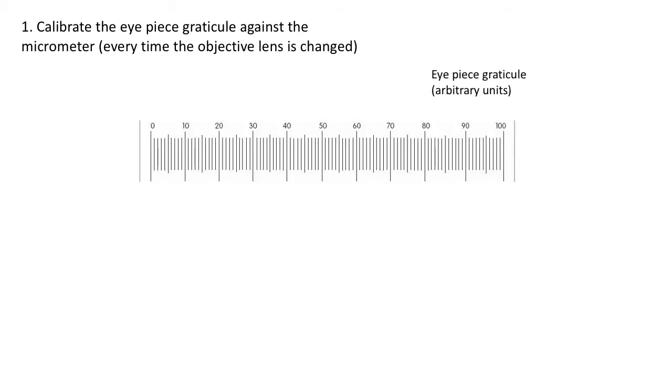When you look down the objective lens, you will always be able to see the graticule. What you want to do is move the slide around until you can position the micrometer on the slide next to the eyepiece graticule. In this example, you can see the stage micrometer is positioned next to the eyepiece graticule.